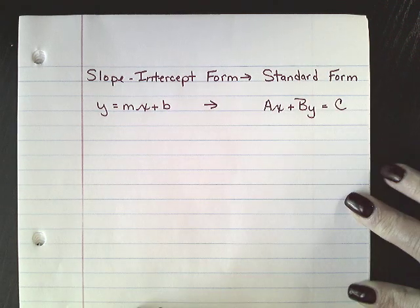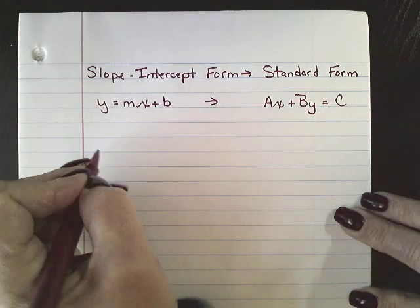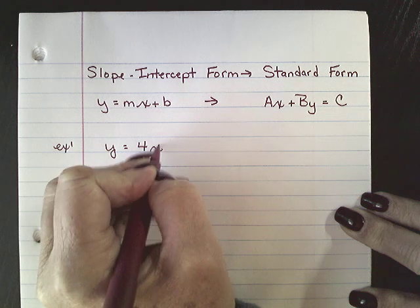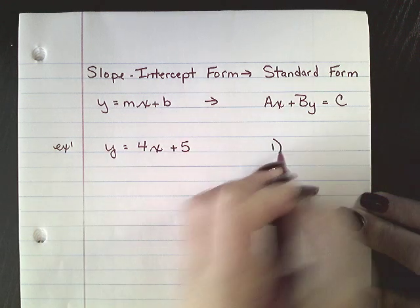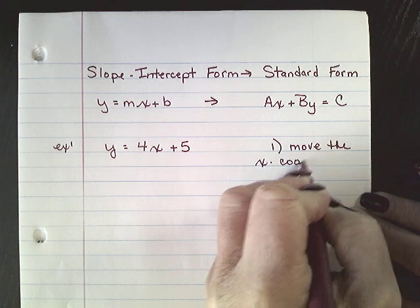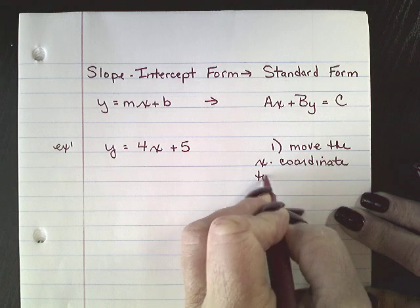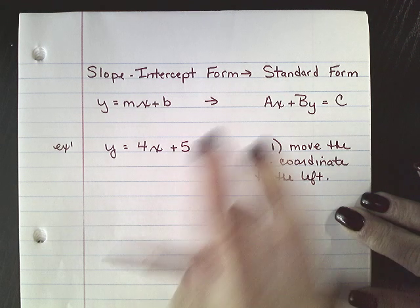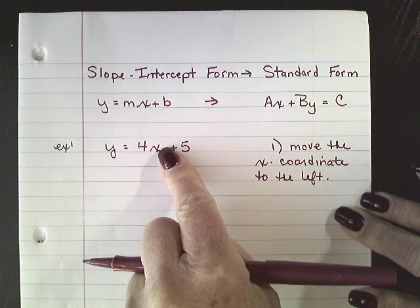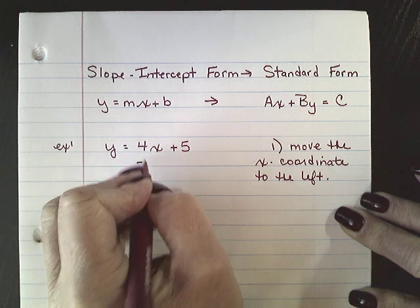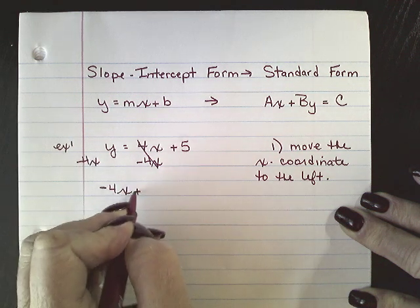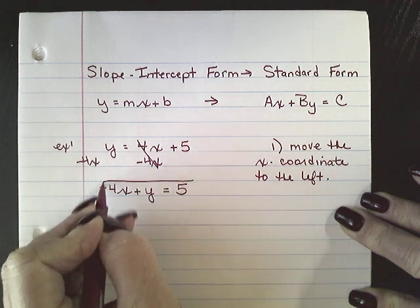So we're going to go from slope-intercept form this time into standard form. We'll start right out with our examples. We have y equals 4x plus 5. So all I'm going to do here is move the x-coordinate to the left. I'm going to add a negative 4x to both sides. Now I have negative 4x plus y equals 5. Standard form is done.